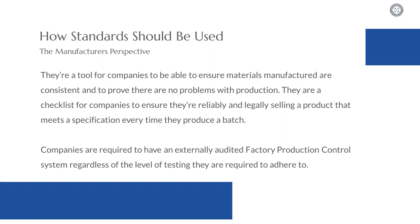Companies who manufacture these products are required to have an externally audited factory production control system, regardless of the level of testing that they are required to adhere to. This is typically done through ISO 9001, which is why you'll find that pretty much every manufacturer has it. However, it is one where the different levels of testing can give you different levels of difficulty. Binders, for example, will have a more thorough inspection because they will actually have to have a second set of inspections, which is how you wind up with your random spot checks through the year.